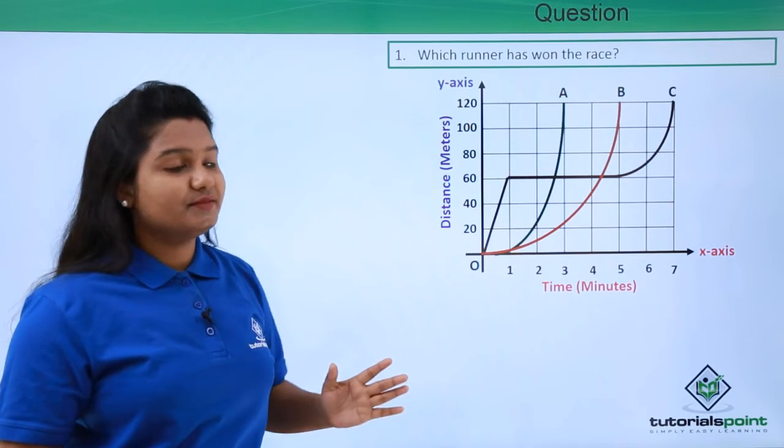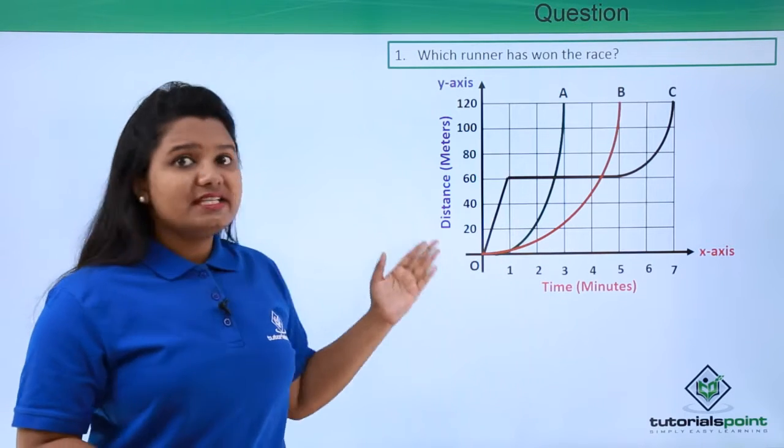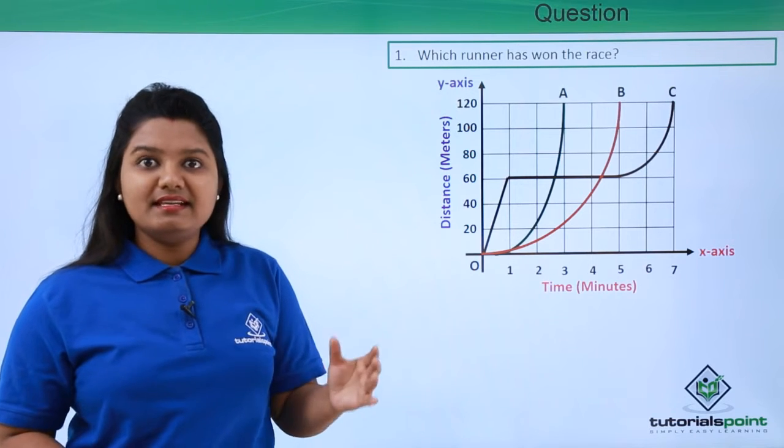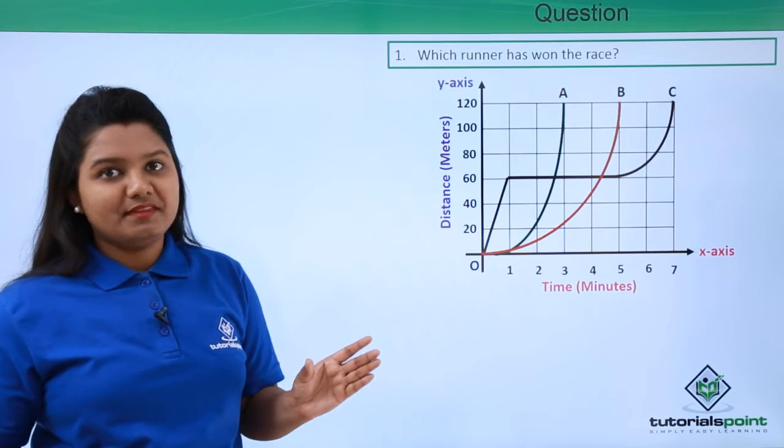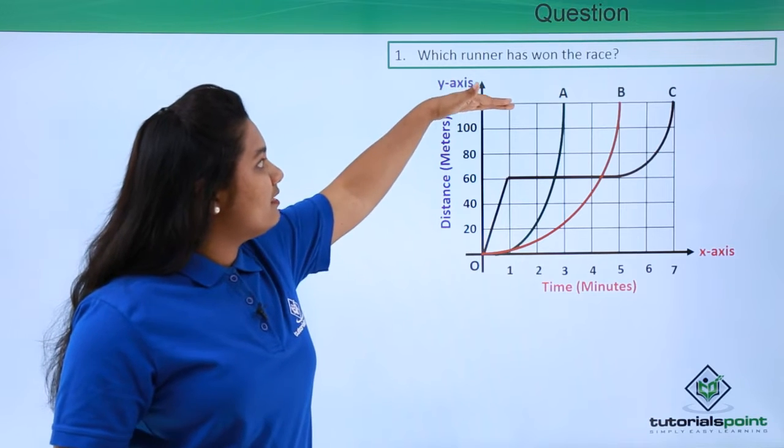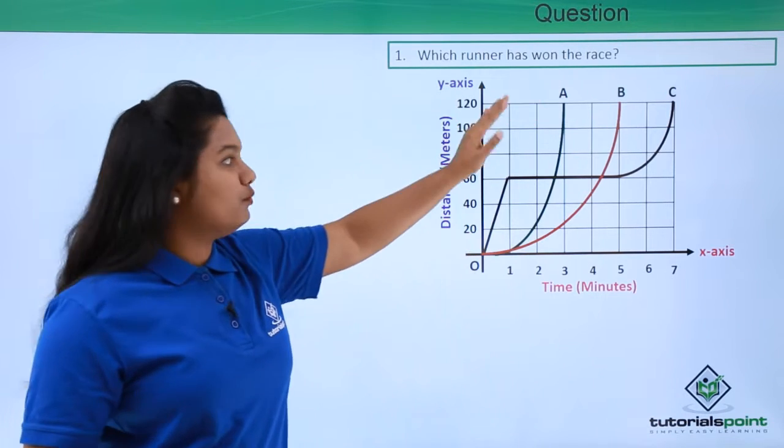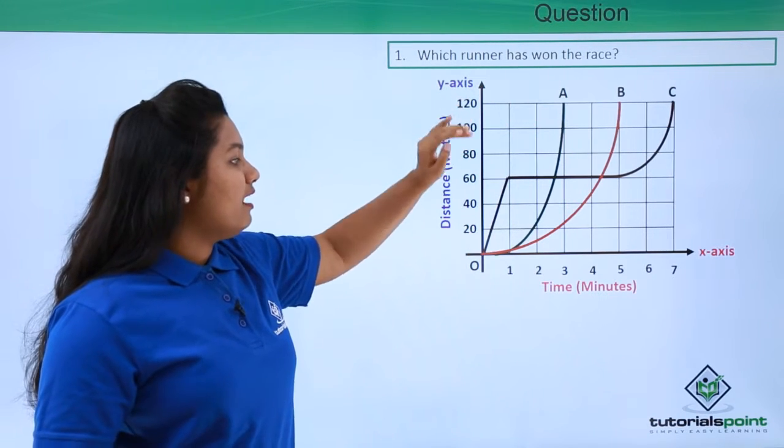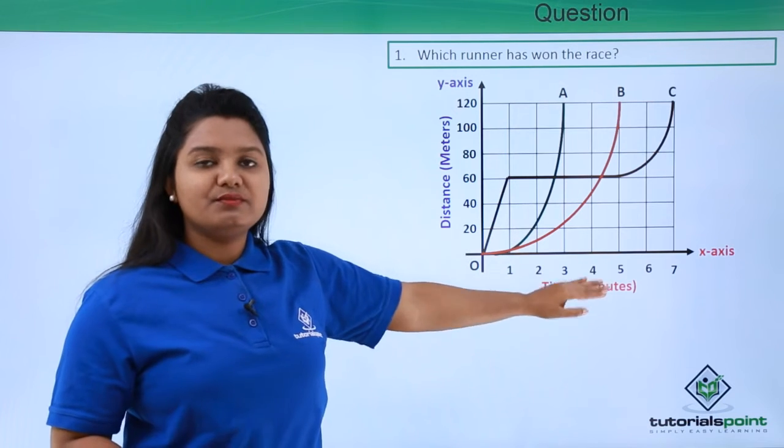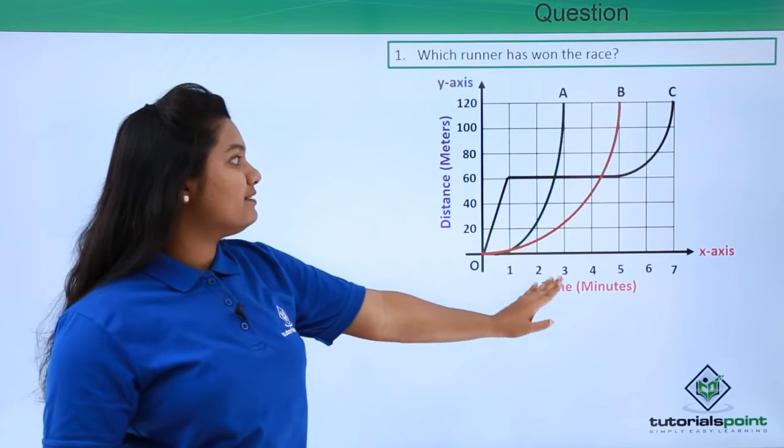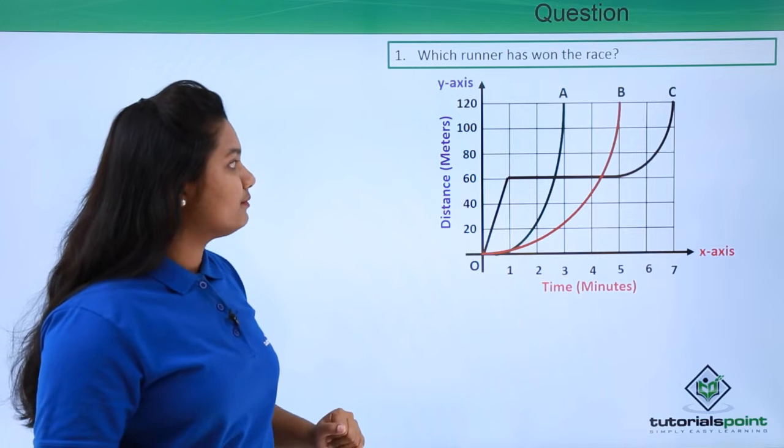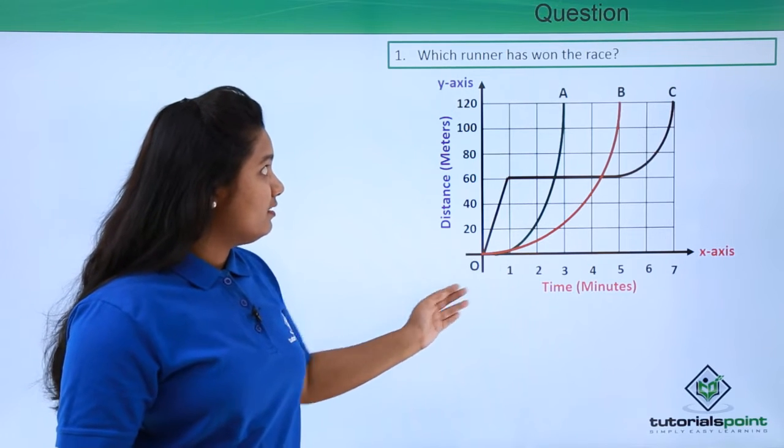Now, the winner is the one who completes the race in the least time possible. This is the final point of the race, that is 120 meters ahead, and this is the time axis which represents the time each body has taken to cover a certain distance.